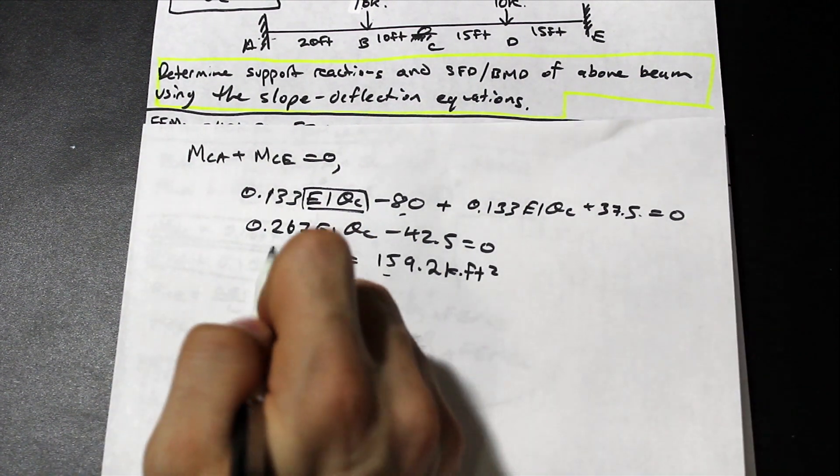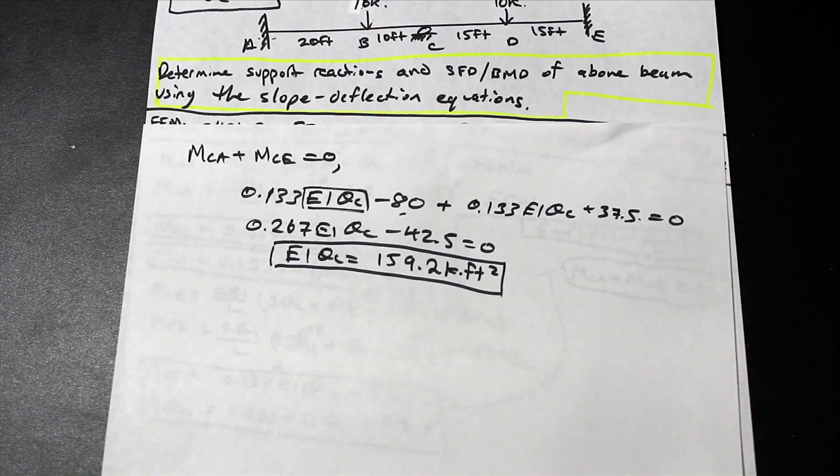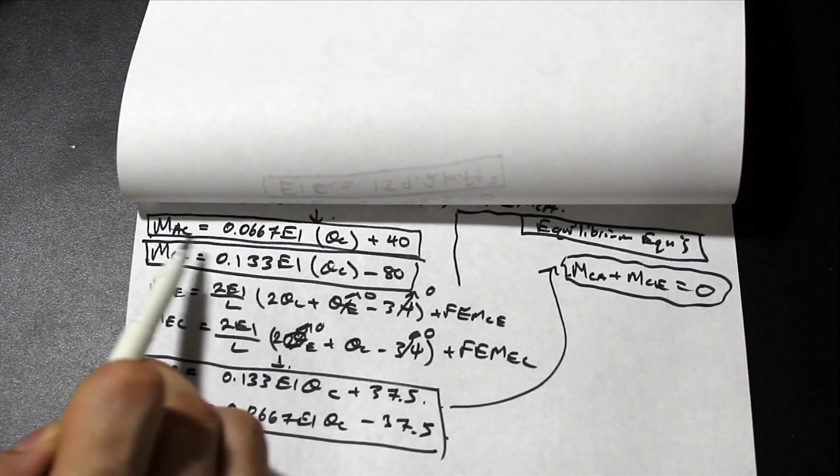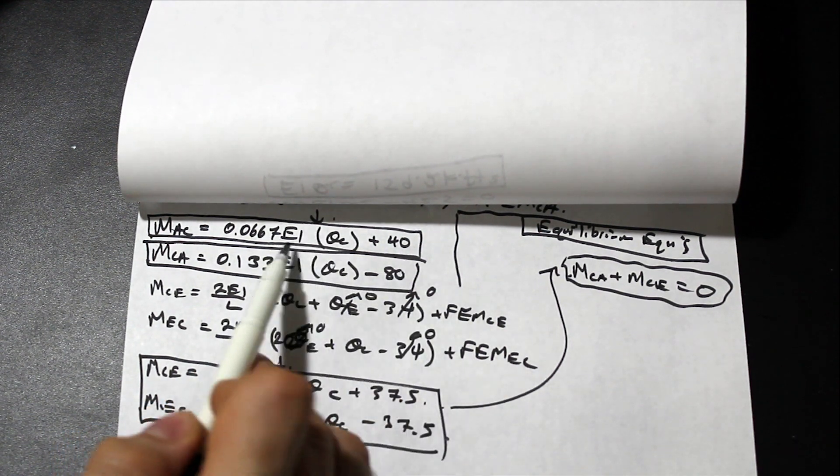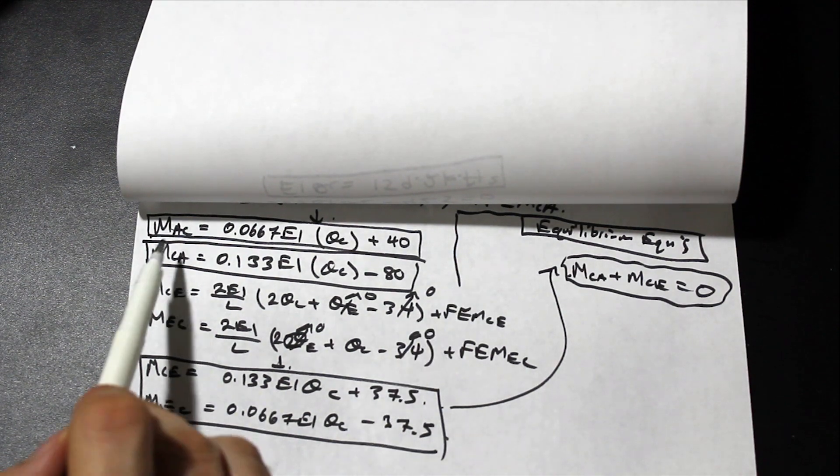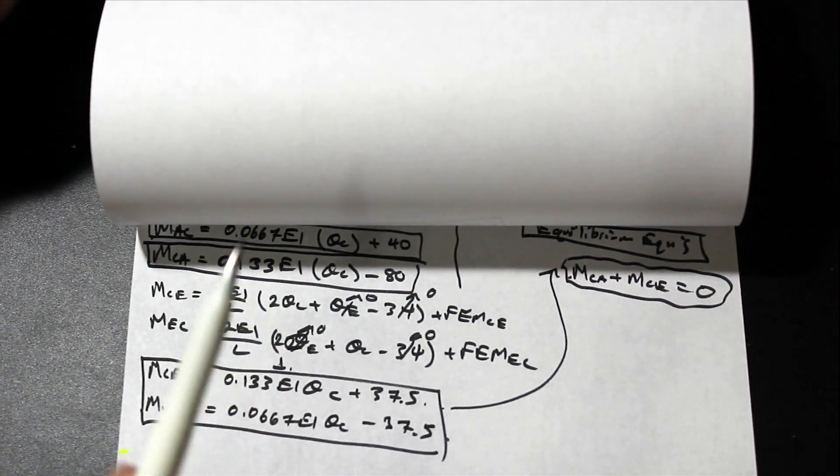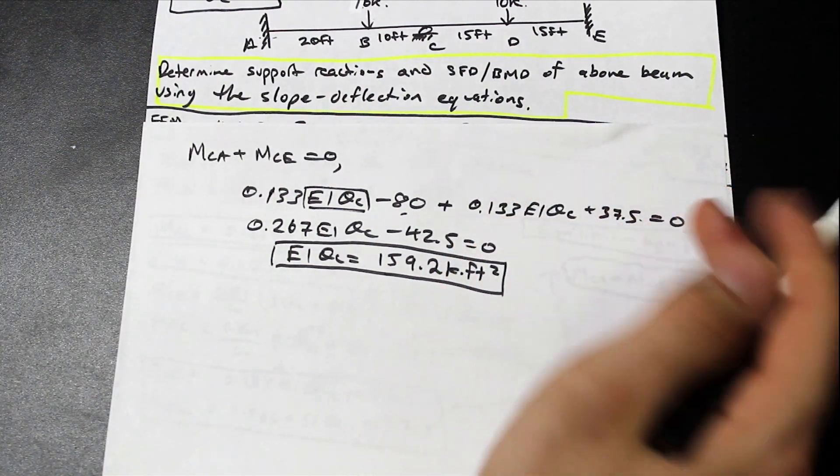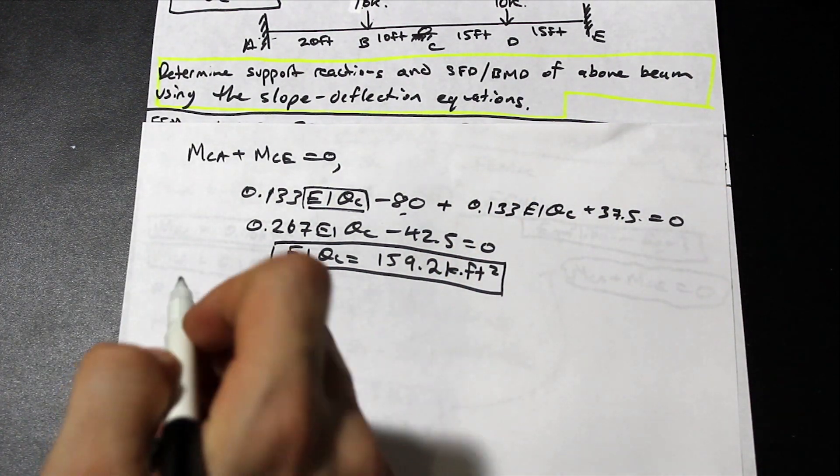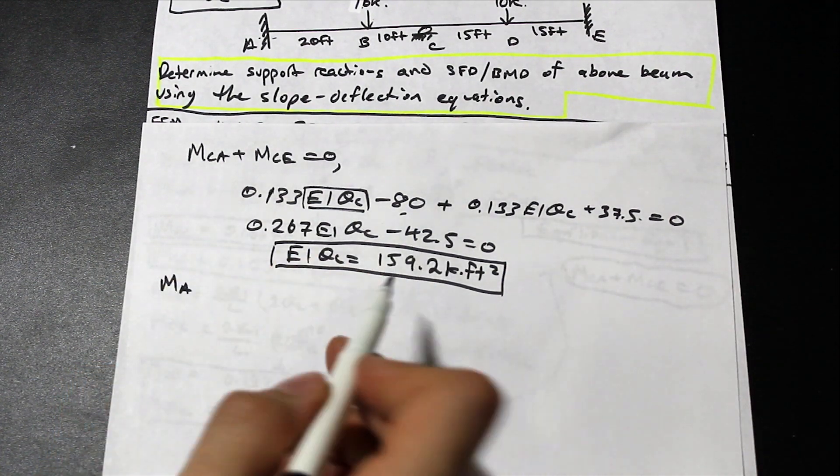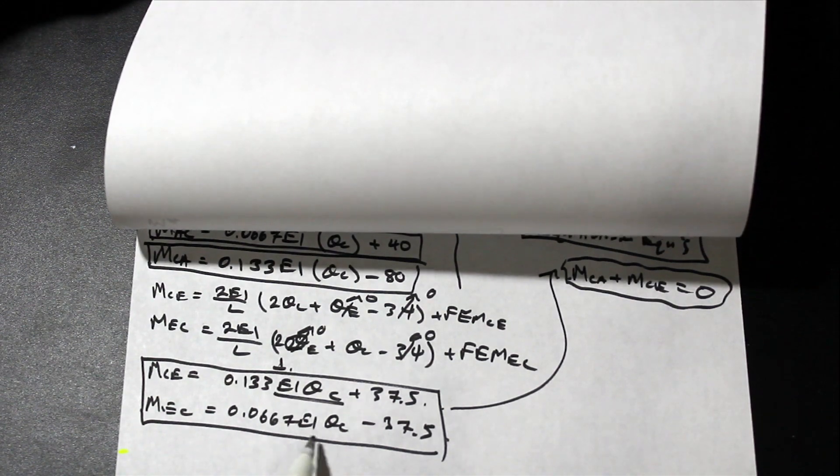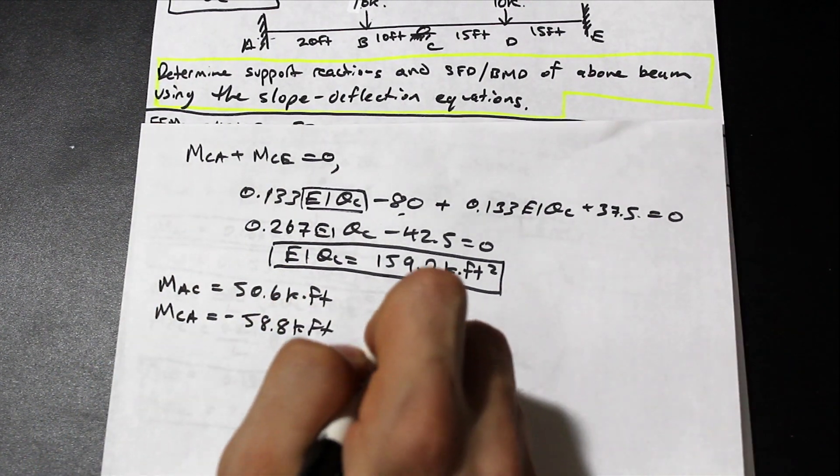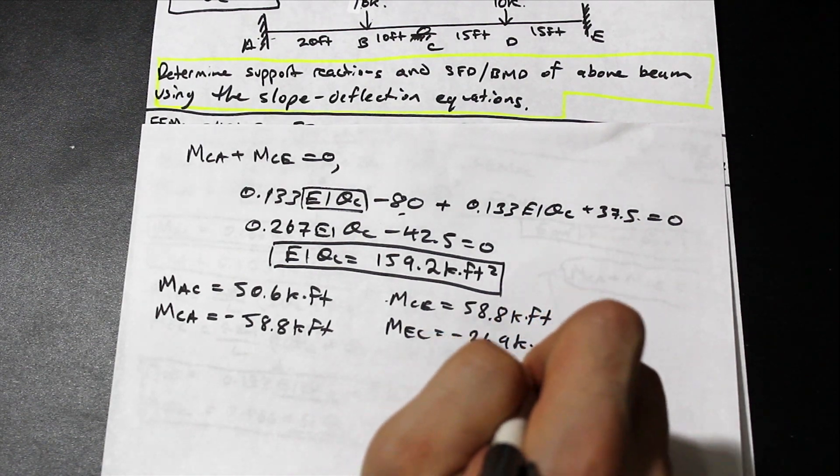All right, and what can we do with this value? Well, if we go back to our equations, so if we go back here to our moment equations, as you can see, the only unknown here on the right side is EI θC, and if we plug in the numerical value for EI θC in these equations, we are going to get the values of the moments, and those are the end moments, and we can go ahead and we can solve the beam using those, and that's the idea behind the slope deflection method. So go ahead, you know, you can go back in the video, find those moment equations again, and try and plug them in. I'm going to give you the values here, so what we did is we were just plugging in EI θC 159.2 in for these values here. Perfect.